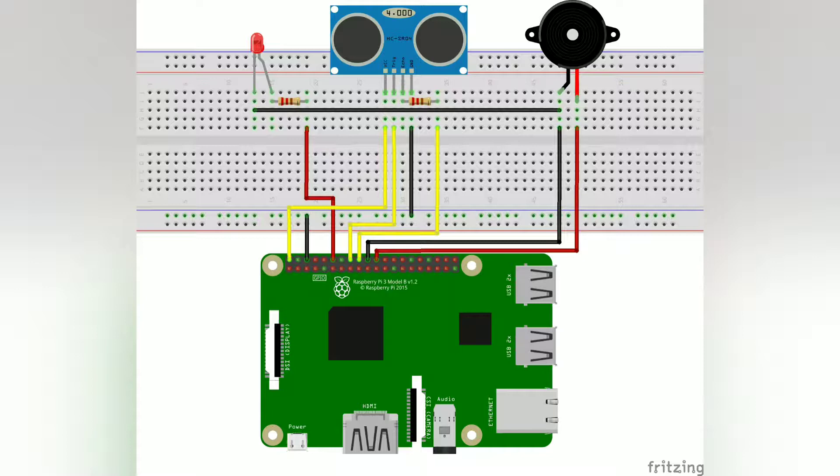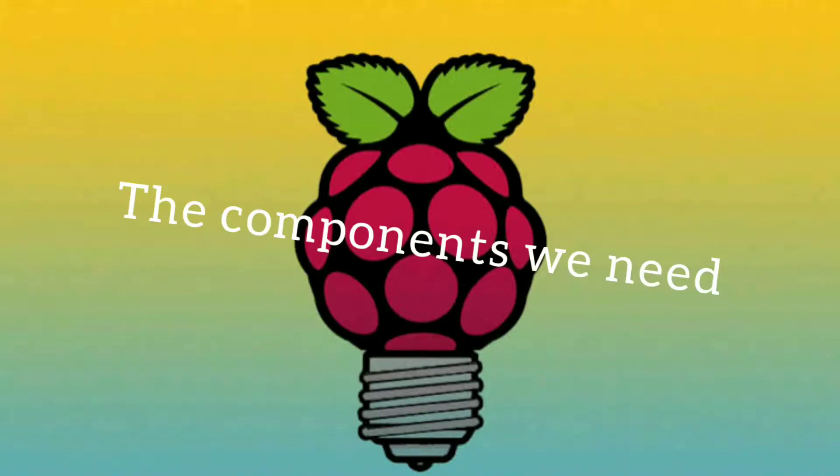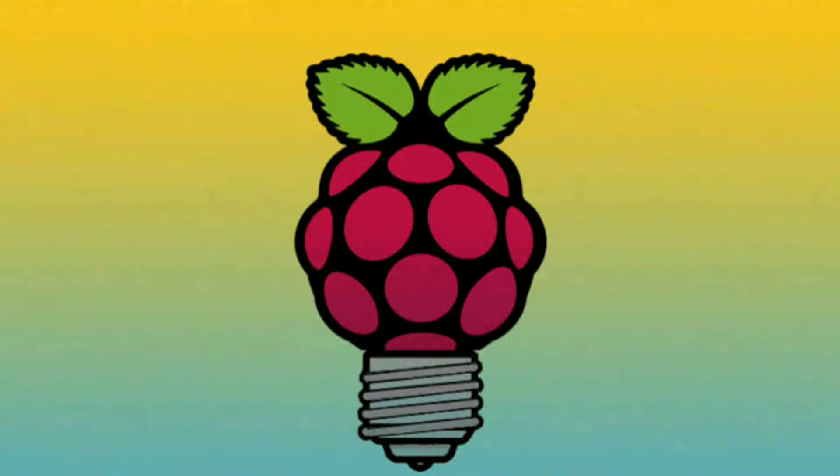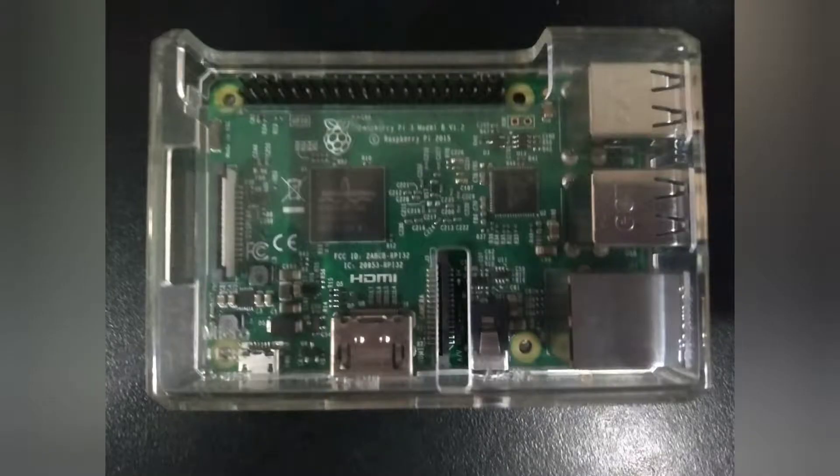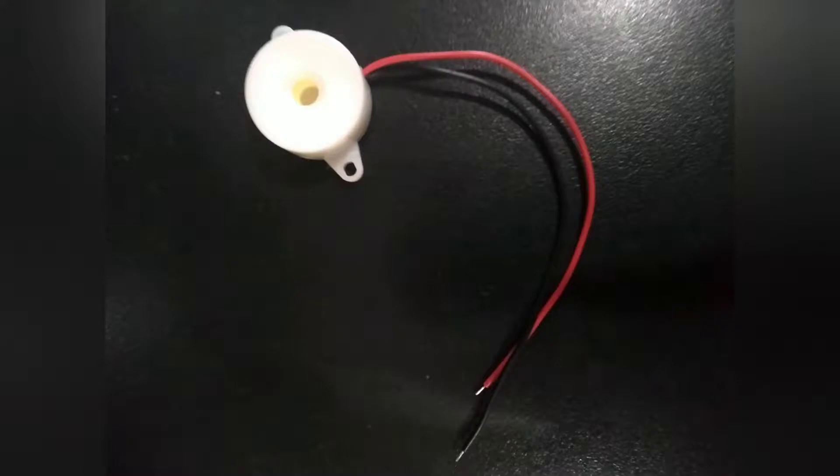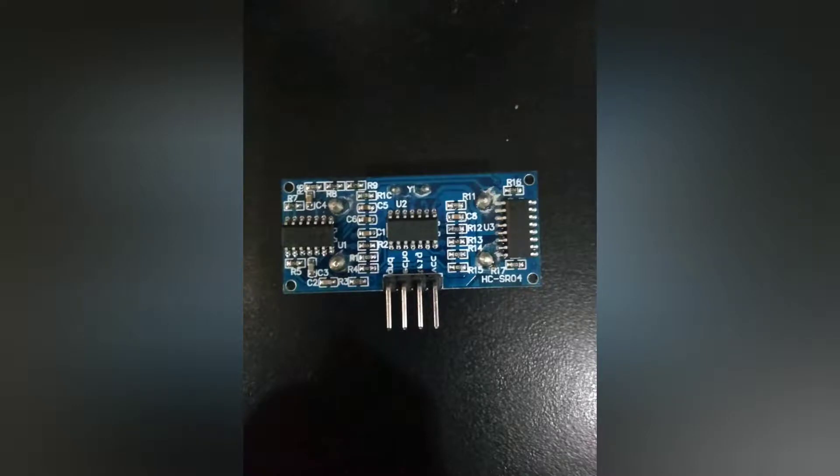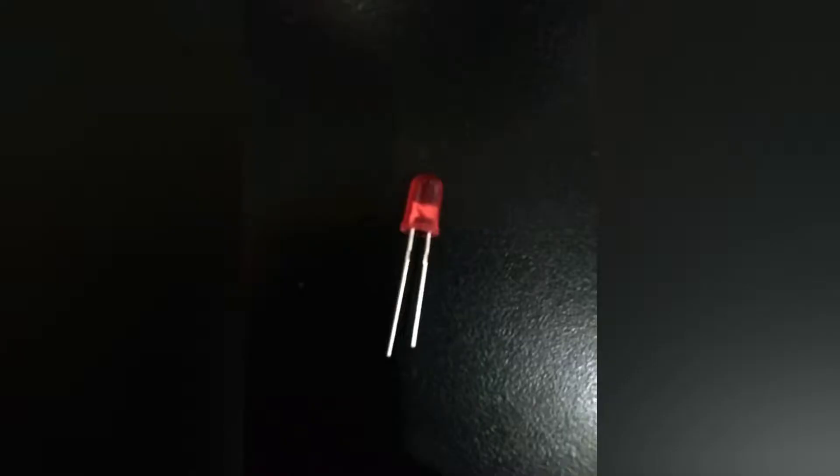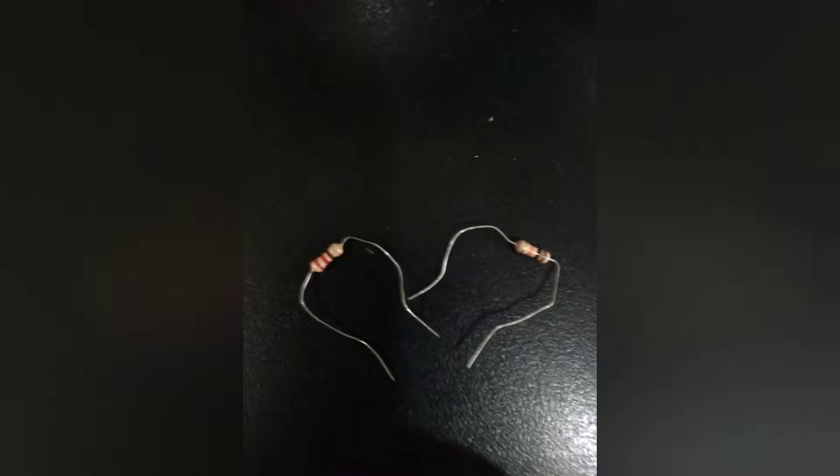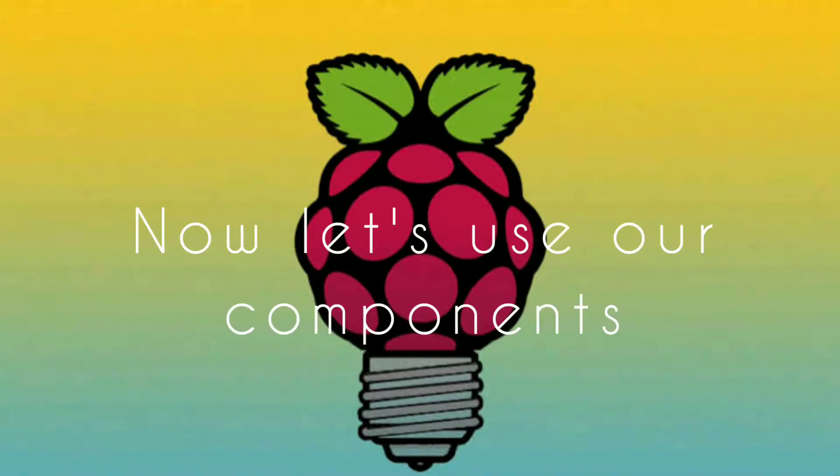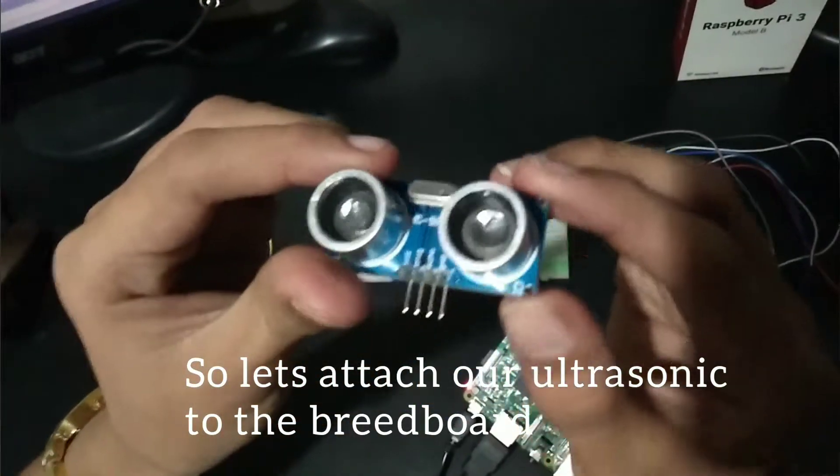So what are the components we need? We need a Raspberry Pi board, a buzzer, an ultrasonic sensor, an LED, and a 220 ohms resistor. Now let us connect our components, starting with this ultrasonic sensor.